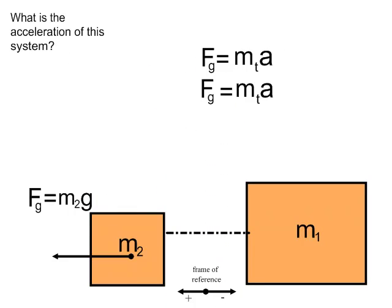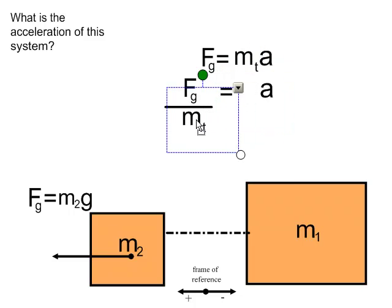So the force of gravity is providing the acceleration for the total system. So I'm going to work with this equation and do a little bit of rearranging. I am going to take the force of gravity, and I am going to divide by the total mass of the system, and that will effectively isolate acceleration.